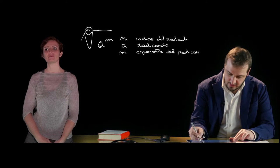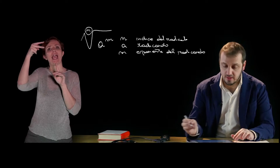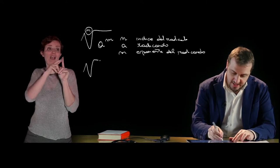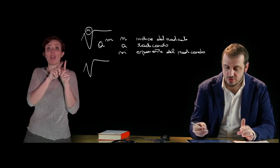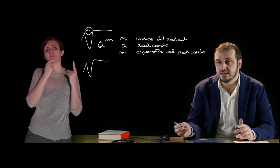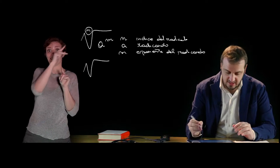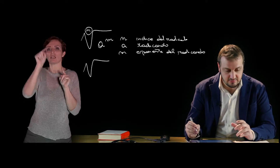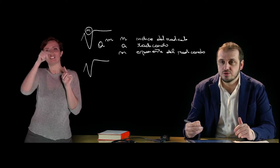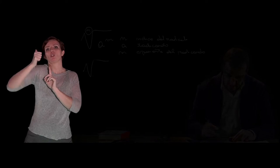If n equals 2, we speak of square radicals — those where the index does not appear, where the index is implicit. If n equals 3, we speak of cubic radicals. In general, the nth root is defined as the inverse operation of raising to the power with exponent n.